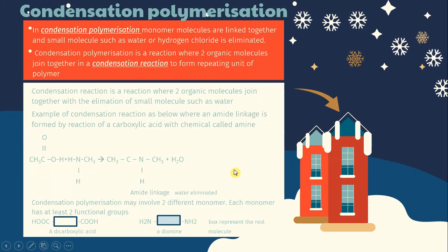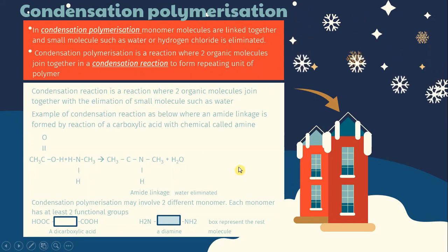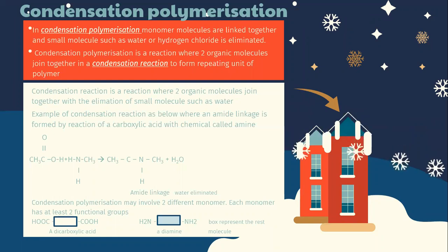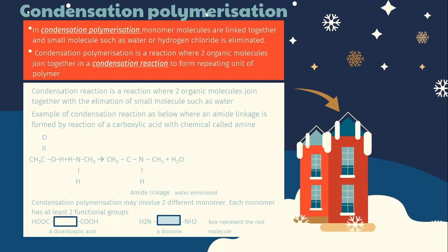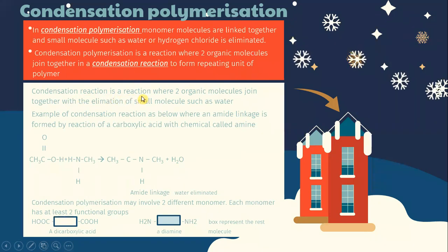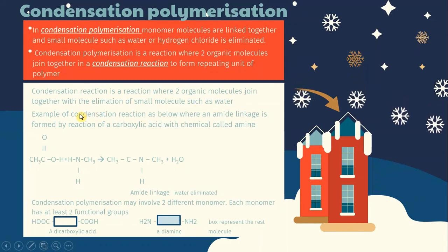Condensation polymerization: in condensation polymerization, monomer molecules are linked together and a small molecule such as water or hydrogen chloride is eliminated. It is a reaction where two organic molecules join together in a condensation reaction to form repeating units of the polymer. A condensation reaction is a reaction where two organic molecules join together with the elimination of small molecules such as water.